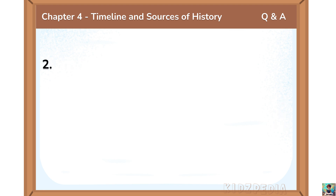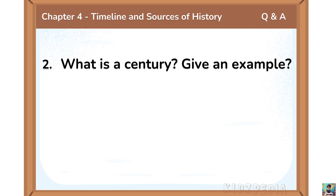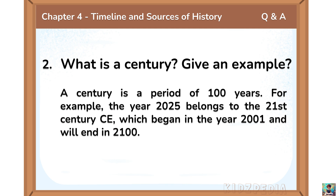Question number 2. What is a century? Give an example. A century is a period of 100 years. For example, the year 2025 belongs to the 21st century CE, which began in the year 2001 and will end in 2100.